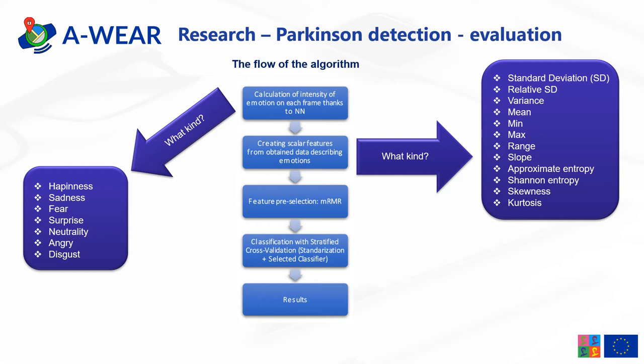Furthermore, measures of information disorder were also taken into consideration: approximate entropy, dedicated to medical time series, and Shannon entropy. This set of features was calculated for all types of emotion records. Subsequently, a feature pre-selection algorithm — so-called maximum relevance, minimum redundancy — was used to decrease the number of features used for training. Then, classification with stratified cross-validation was used with the selected classifier. Finally, results with prediction were obtained.